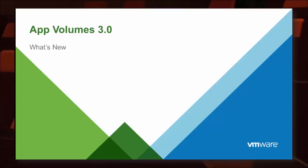App Volumes 3.0 is about unifying and making app delivery as simple as possible. We're not just delivering to one desktop at a time. With instant cloning — previously VMFork — we could be provisioning to thousands of virtual machines at any given time. So if you're delivering hundreds of applications to thousands of machines, that number grows really big, really fast. App Volumes is about streamlining that.